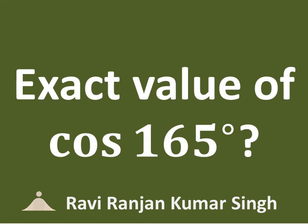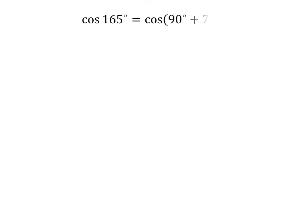In this video, we will learn to find the exact value of cosine of 165 degrees. The 165 degrees is equal to 90 degrees plus 75 degrees, so cosine of 165 degrees is equal to cosine of 90 degrees plus 75 degrees.